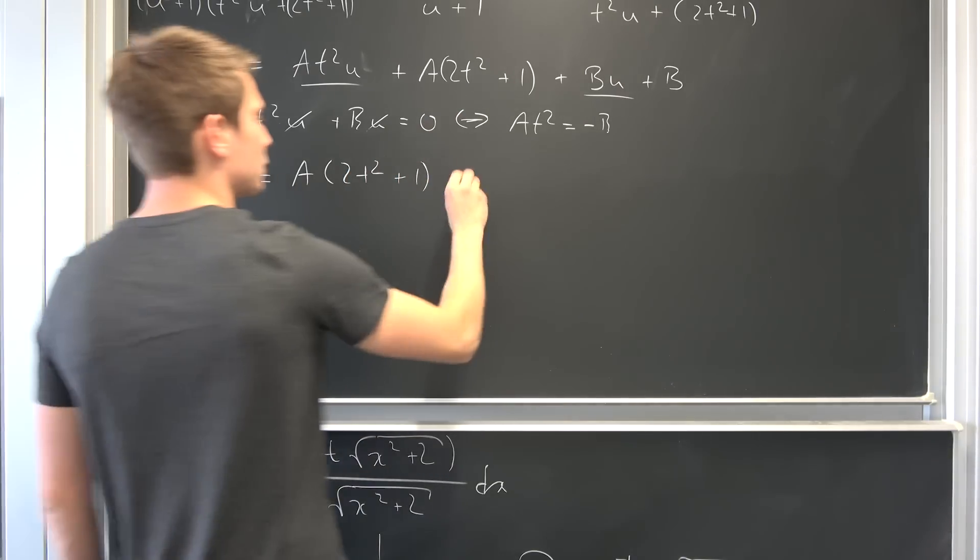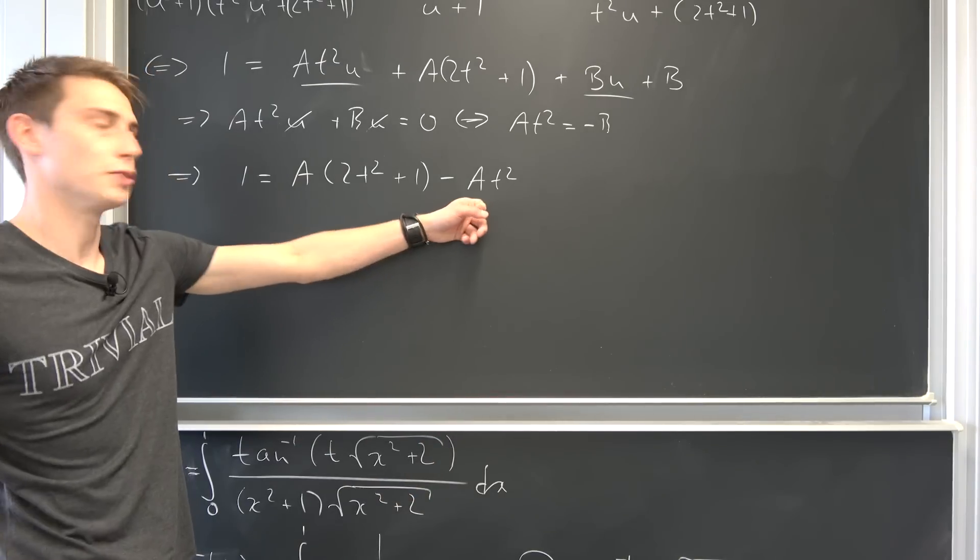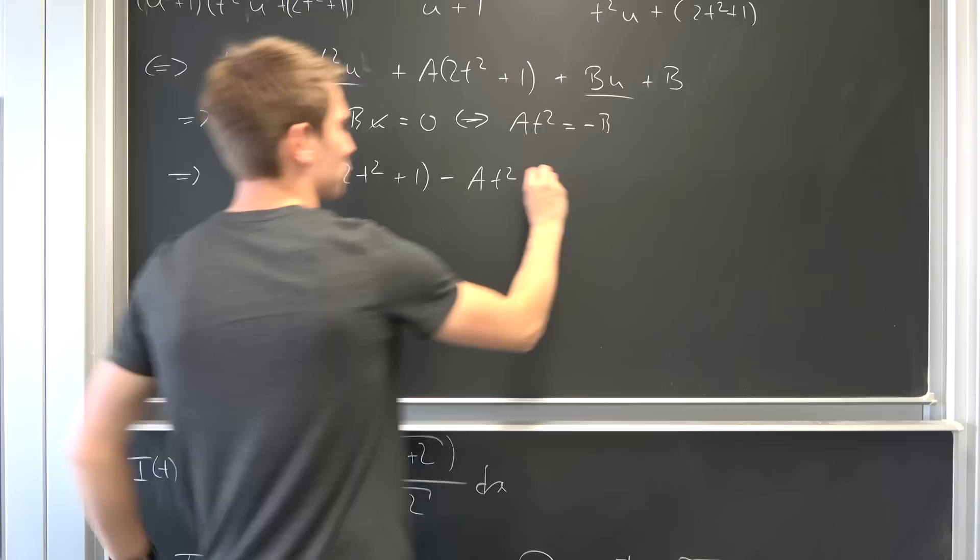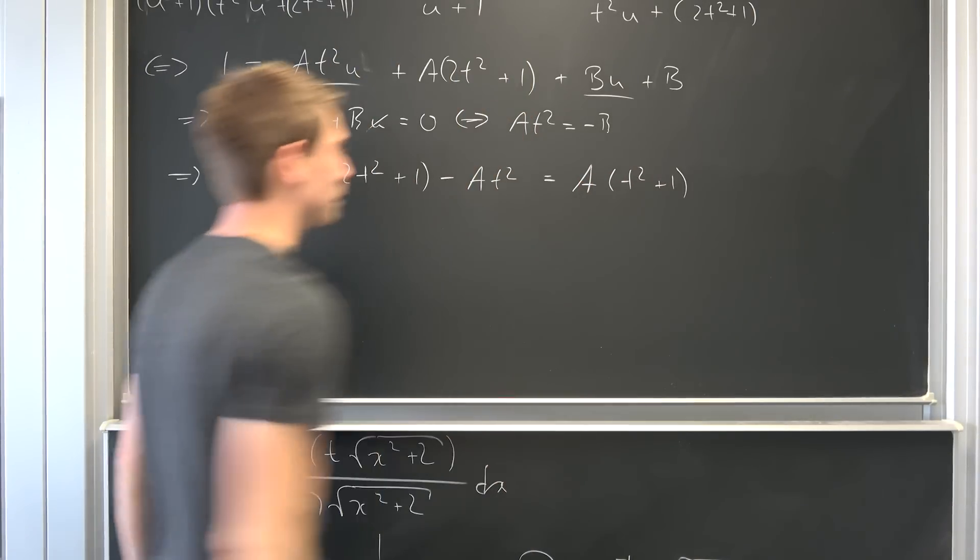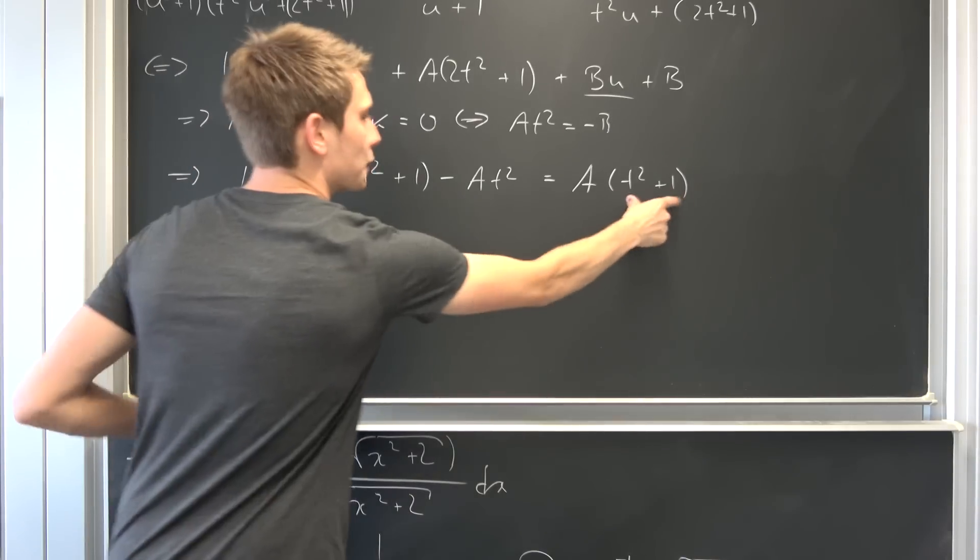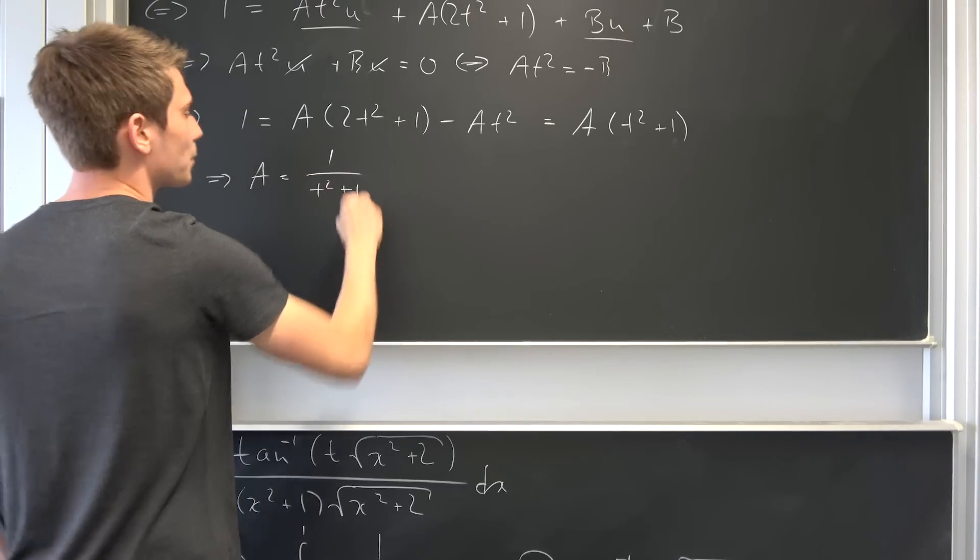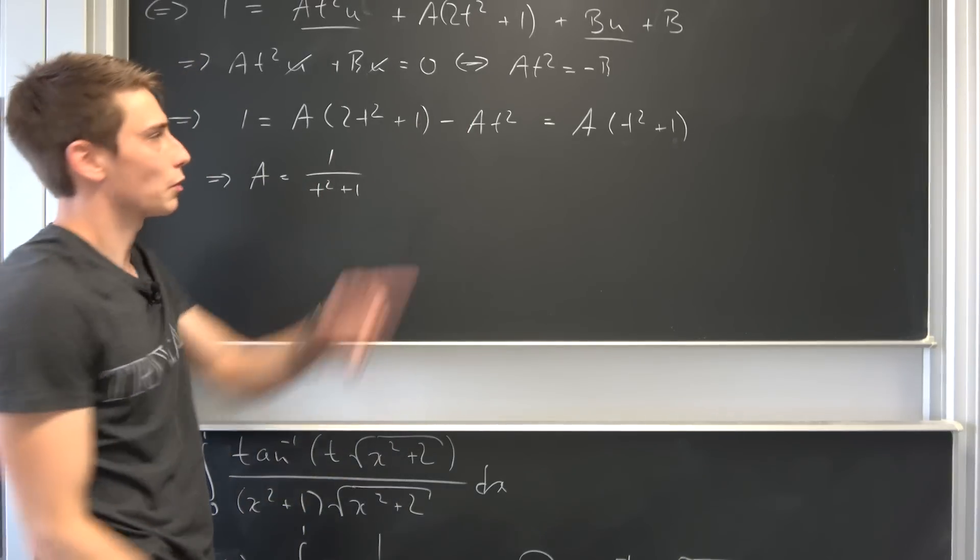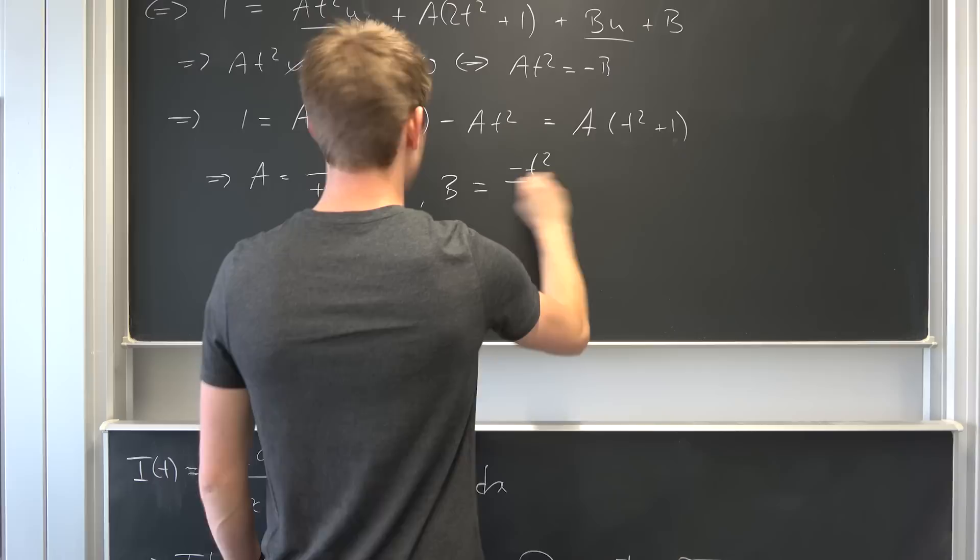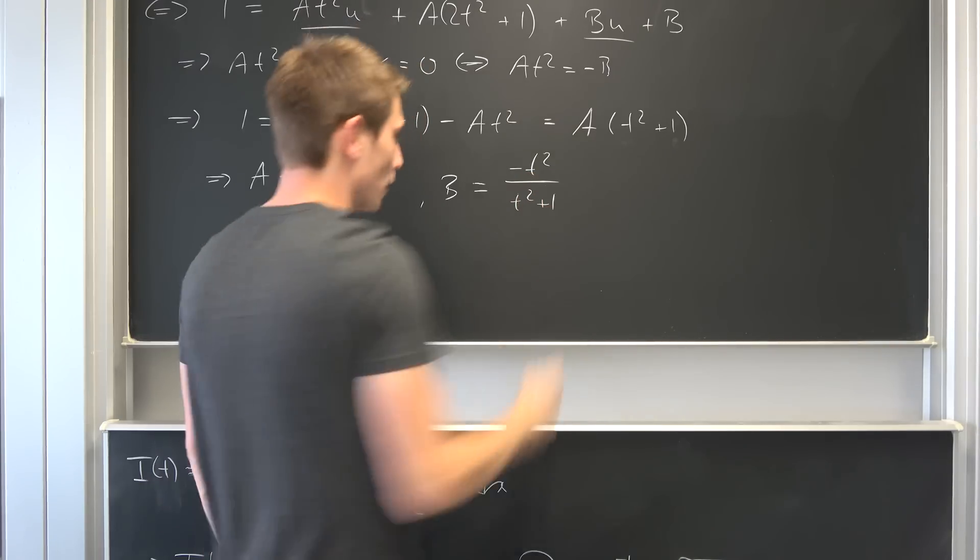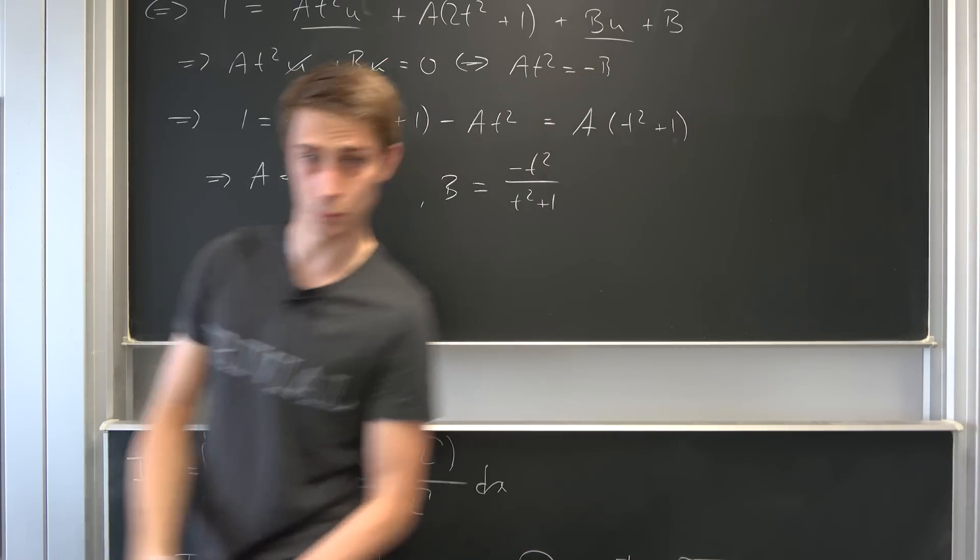So it also means one is nothing but - that cancels out and that cancels out. Now we have two times t squared plus one, and B is nothing but negative A t squared. And you see we can factor out the A once again. One of the t squared is going to cancel out, so we have A times t squared plus one. And now we can just divide both sides by this thing right here. That means A is nothing but one over t squared plus one.